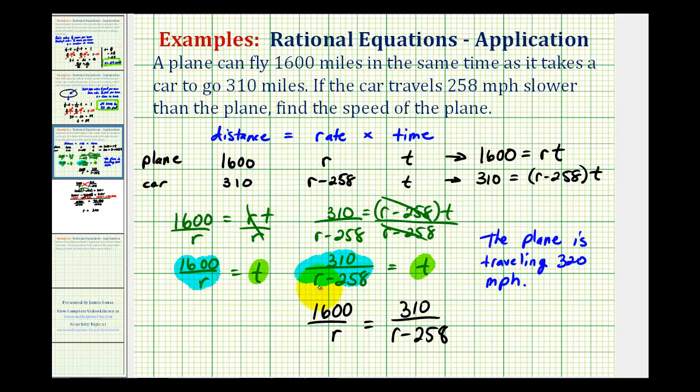And it doesn't ask, but the car would be traveling 320 minus 258 miles per hour, which would be 62 miles per hour. Okay, I hope this explanation helps.